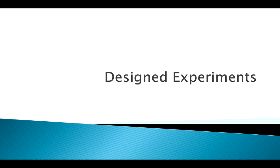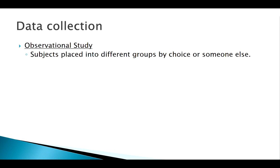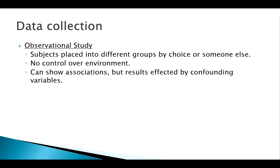Welcome back. Today we're going to be talking about experimental design. We're in this larger thought process about data collection. We've already talked about observational studies and anecdotal evidence. With observational studies, we're not controlling the environment — people are sorted into control or treatment groups on their own. We can find interesting associations, but there are always confounding factors. So to get rid of those, we can do a controlled experiment.